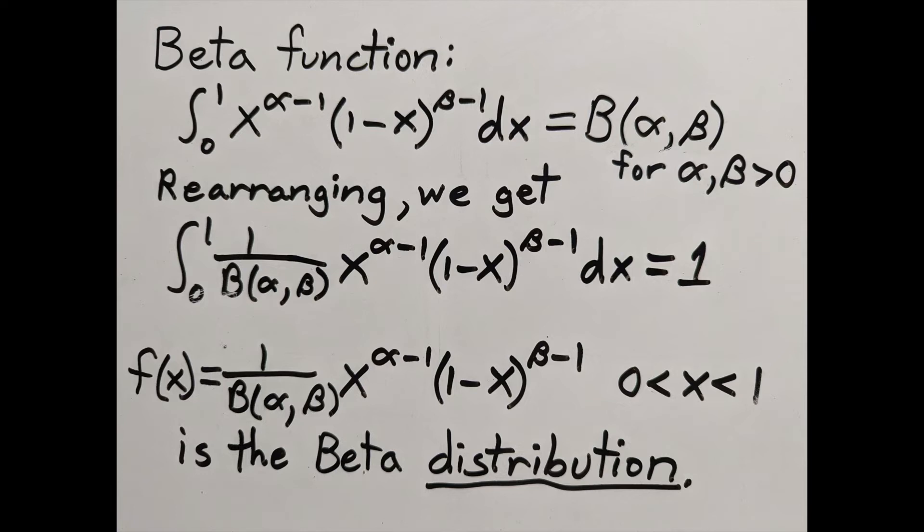This is actually a good way of describing total ignorance. If we have no idea what the probability p is, anything from 0 to 1 is equally likely. That's a uniform distribution, and it's one case of a beta distribution.